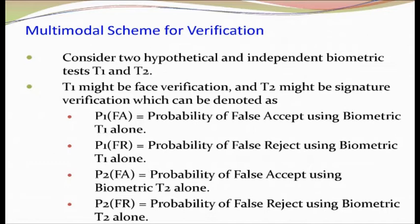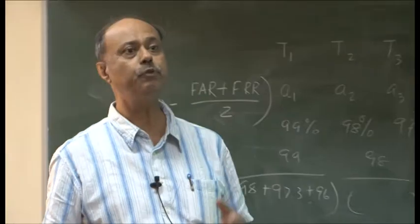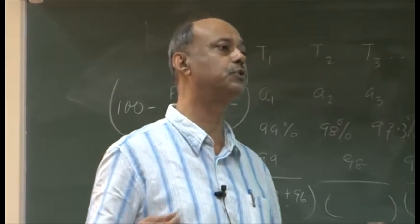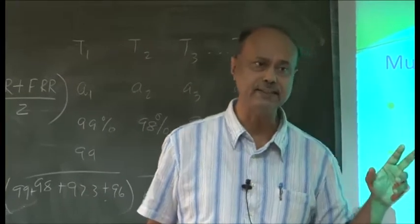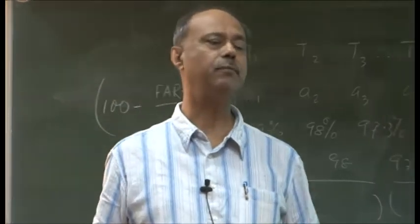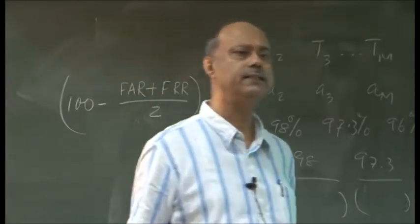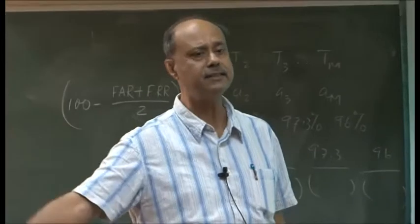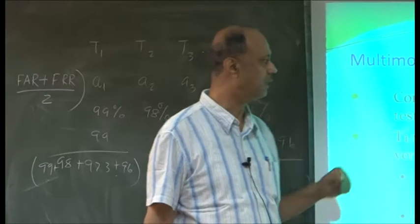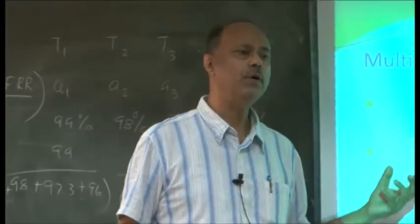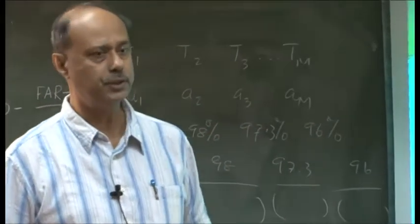By now you know how to fuse the scores, and you know what the false acceptance rate and false rejection rate are. Now, given m number of biometric traits, for each of which the false acceptance rate and false rejection rate are known, you have to compute the expected false acceptance rate and false rejection rate for the fused system. For simplicity, let us consider two biometric traits that are independent — say face and fingerprint.